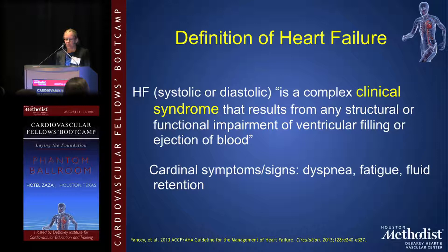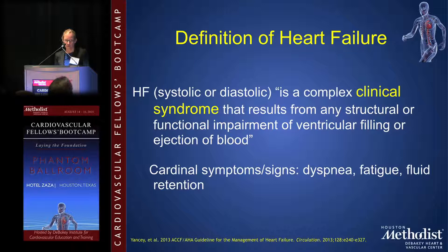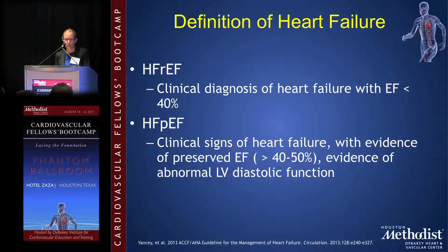There are two main groups of patients with heart failure: those who have a reduced or those who have a preserved ejection fraction. Patients with heart failure with a reduced ejection fraction have a clinical diagnosis of heart failure with an ejection fraction of less than 40%. In comparison, patients with heart failure with a preserved ejection fraction, or HFpEF, have clinical signs of heart failure with evidence of a preserved EF — generally, an ejection fraction greater than 40–50% with evidence of abnormal LV diastolic function.